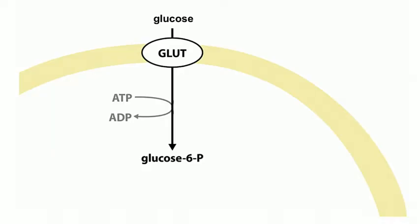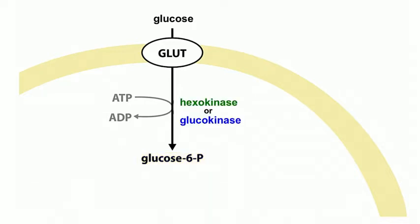Once glucose is inside the cell, you need to trap it by phosphorylating it - adding a phosphate to glucose so it becomes glucose-6-phosphate. Once it becomes glucose-6-phosphate it's trapped in that cell. Enzymes that phosphorylate things are called kinases, and there are two enzymes that can phosphorylate glucose and other six-carbon sugars like fructose: hexokinase and glucokinase.